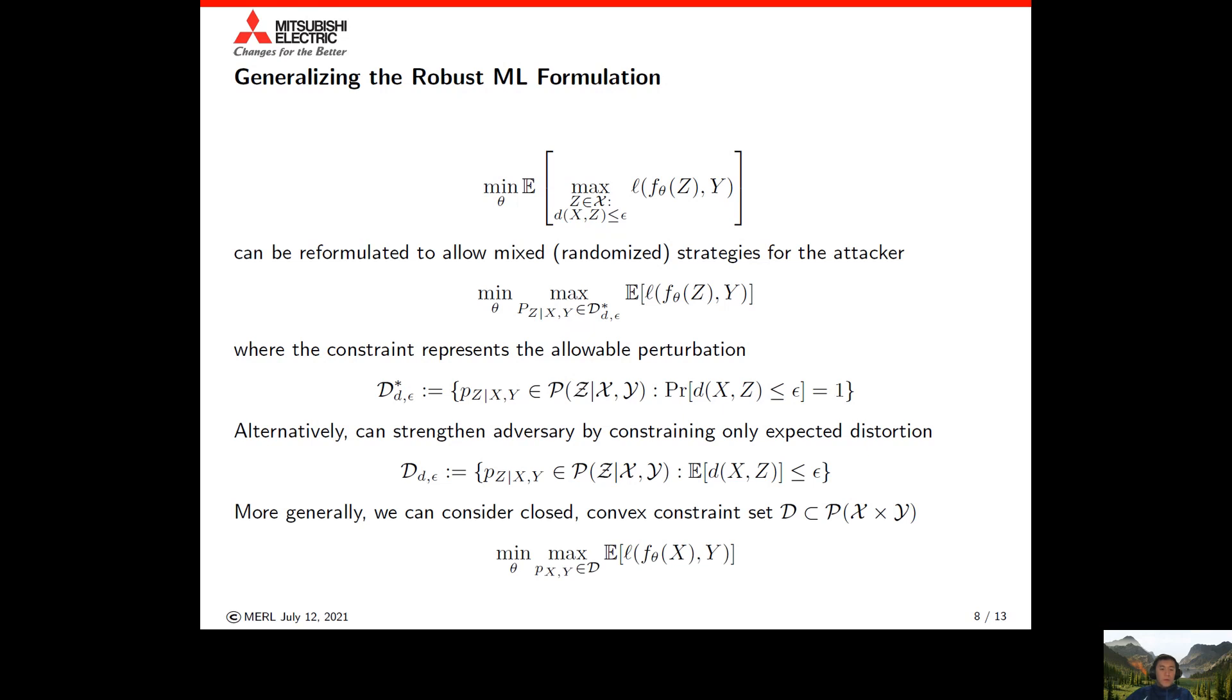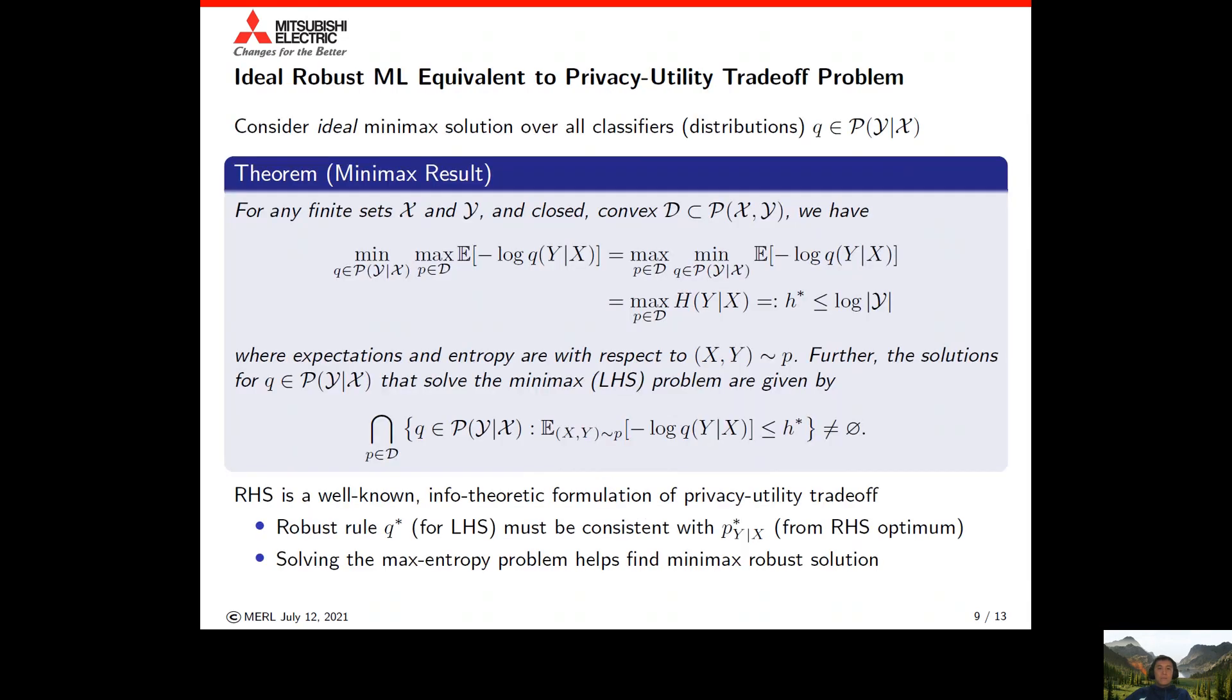Alternatively, we can strengthen the adversary even further by considering only an expected distortion constraint. Even more generally, instead of the channel point of view, we can realize this only depends on the joint distribution between variables z and y. We can view the constraint set as some general closed convex constraint set on joint distributions over x and y. This most general formulation completely subsumes the rest.